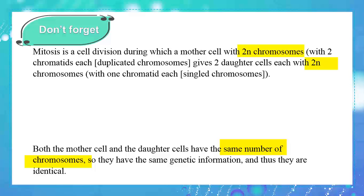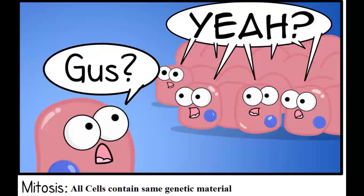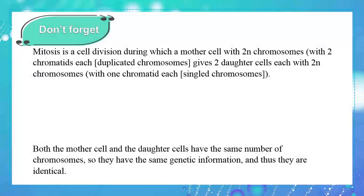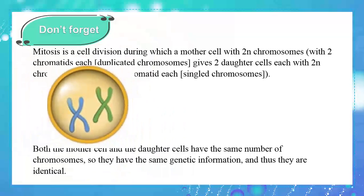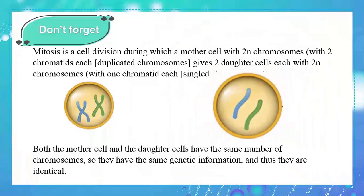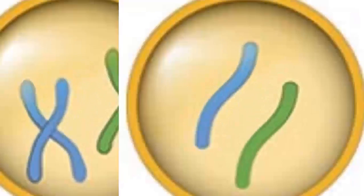Our genetic material is maintained. At the beginning of mitosis, each chromosome is made of two chromatids, while daughter cells end up with chromosomes containing only one chromatid. How this occurs will be the discussion in the next lesson.